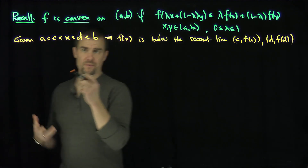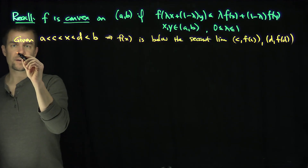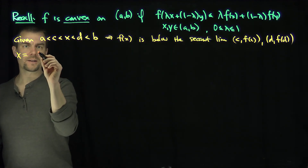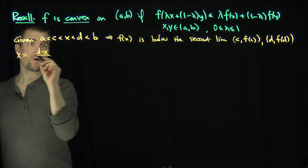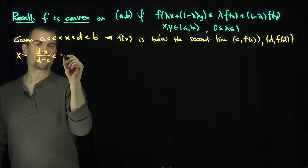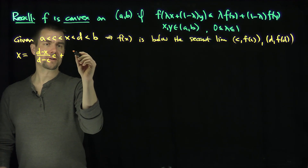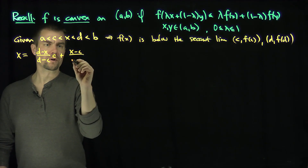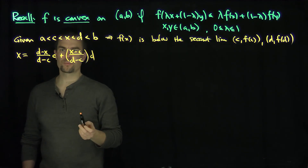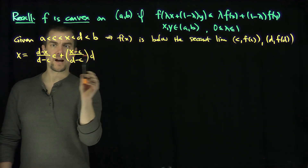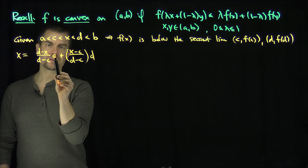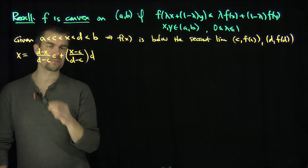If x is between c and d, then we have this decomposition: x equals (d−x)/(d−c) times c, plus (x−c)/(d−c) times d. We can check this is algebraically true: the dx and −cx terms give d−cx over d−c, which equals x, and the c·d and −c·d terms cancel. So this is certainly true.